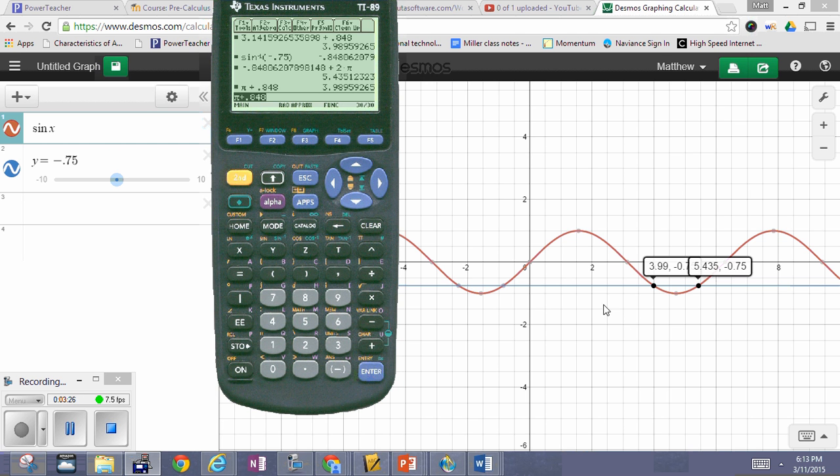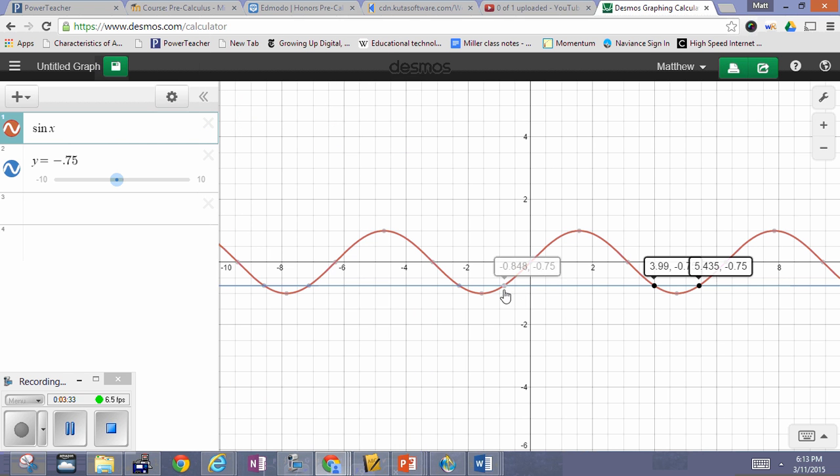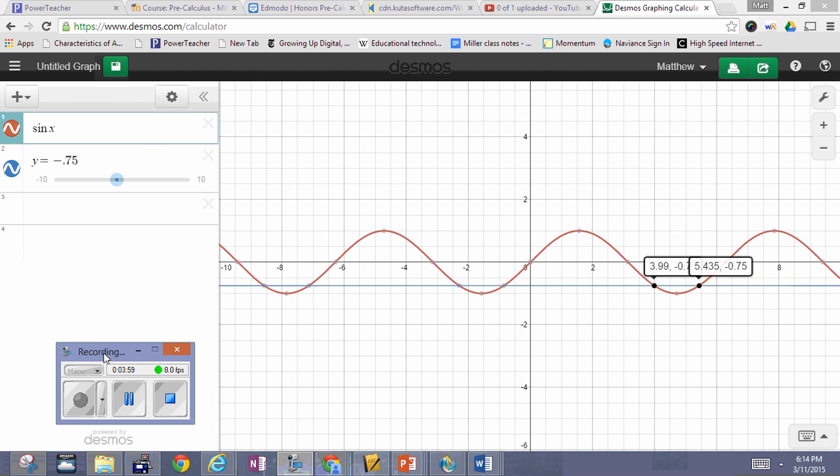So just keep that in mind. You really have to have an understanding of the graphs and their intercepts to be able to evaluate these things and come up with all the solutions. So I would say in terms of the solution, I go 3.99 plus 2 pi, and 5.4 plus 2 pi, or we go the negative 0.848 plus 2 pi, and then the pi plus that positive value of 0.848. So that's how we can proceed to find those.